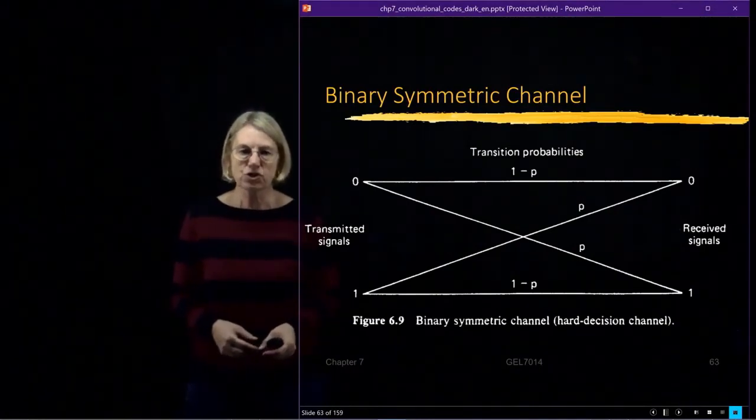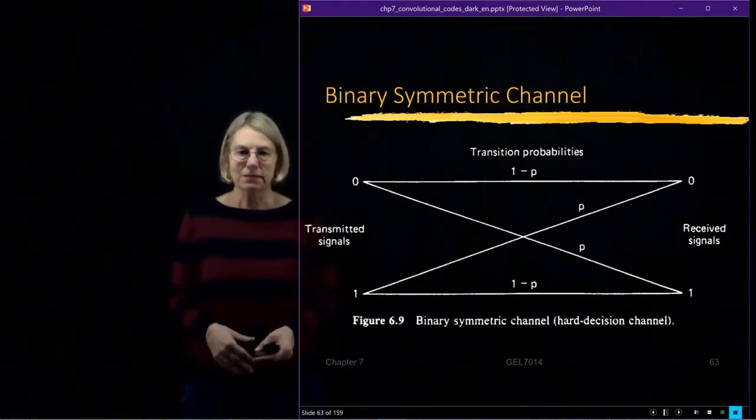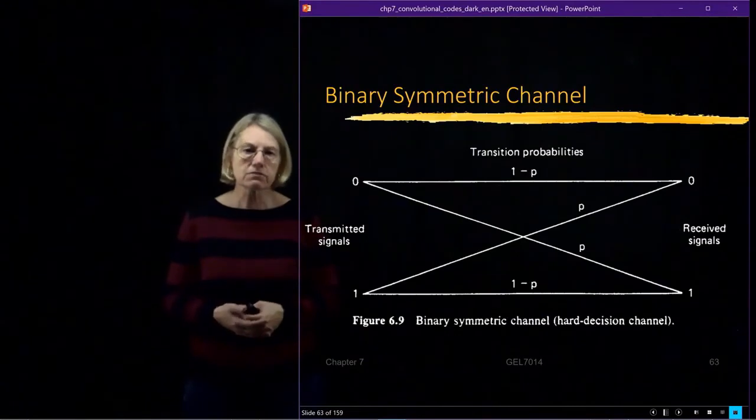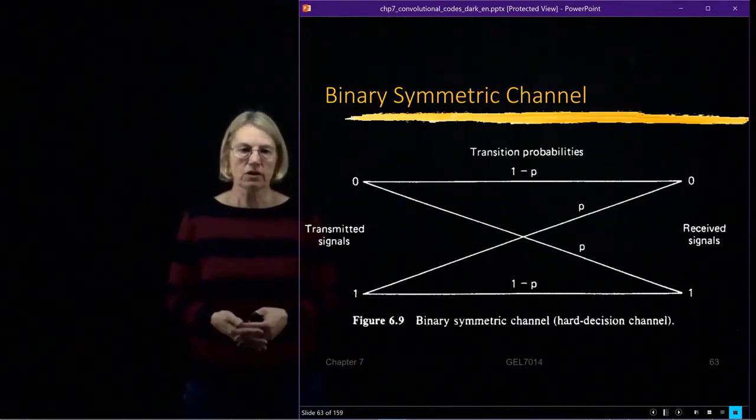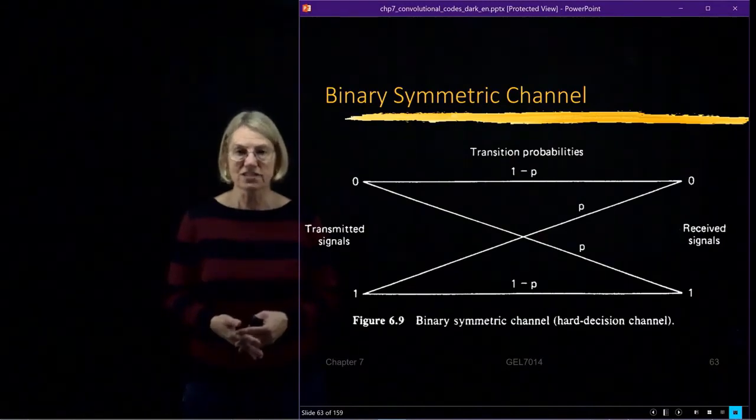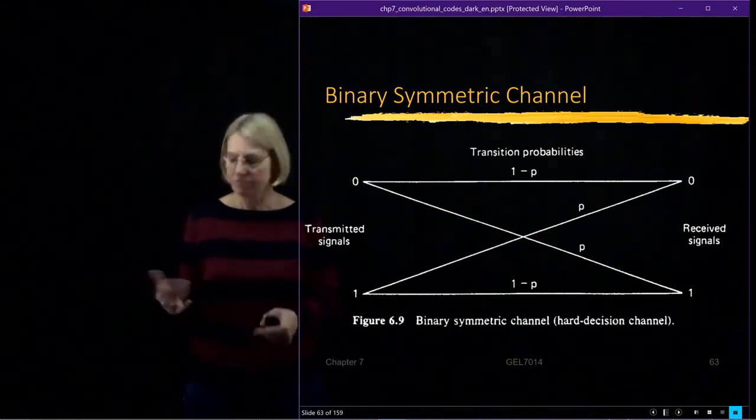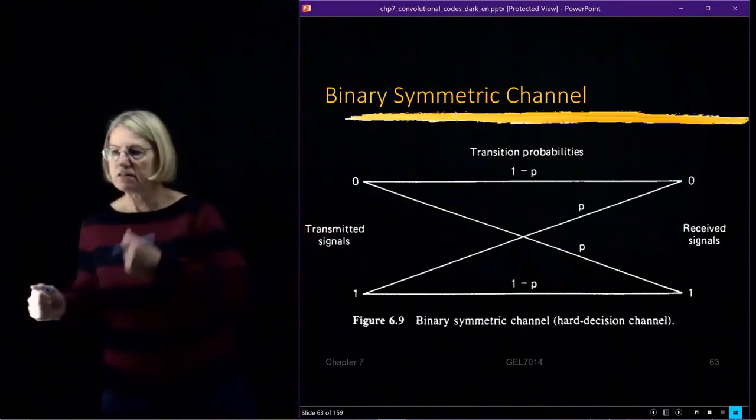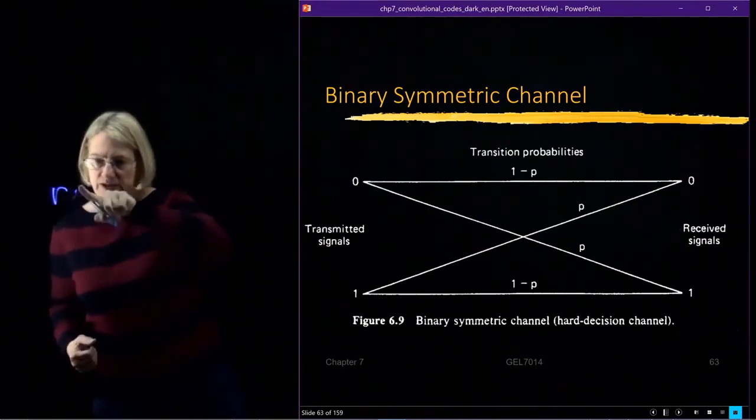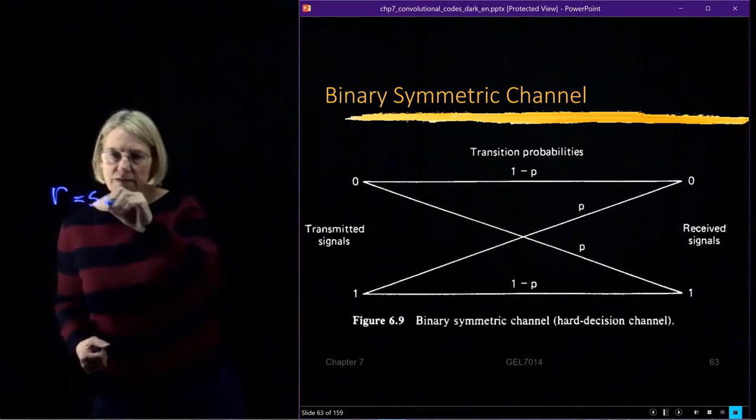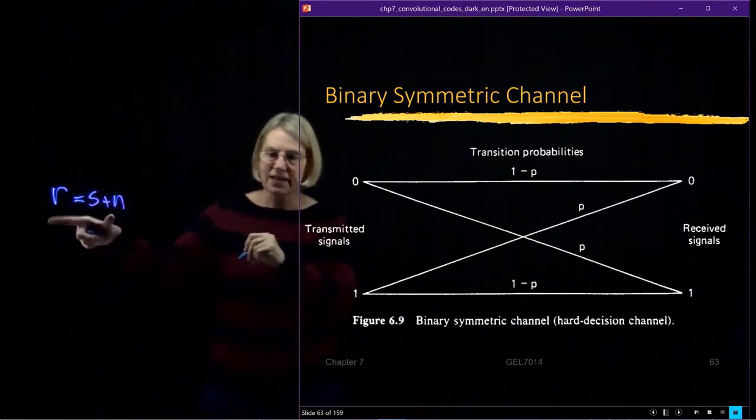If we want to look back into the probabilistic framework that we built for channels for additive white Gaussian noise, if we're looking at hard decisions, it's like taking this idea of the received signal being the transmitted signal plus noise. So this is that idea and this is Gaussian.